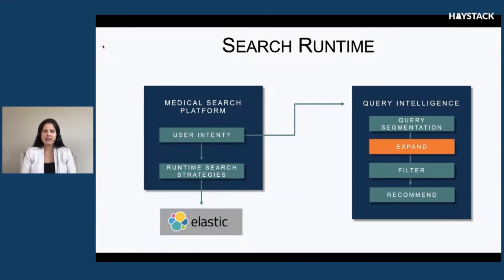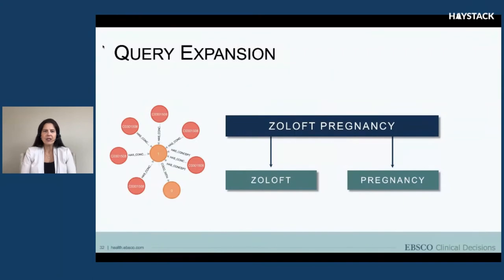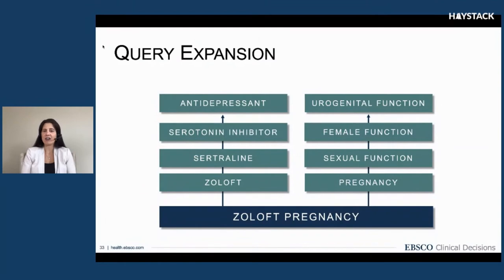Let's look at why we would want to expand a particular query. Here is an example of classic query expansion — someone has searched for 'Zoloft and pregnancy.' We've segmented this into two concepts: Zoloft and pregnancy. However, we don't actually mention Zoloft in our content — our content mentions antidepressants. So what we can do is interrogate our knowledge graph to create a bridge between the query and our content. We can traverse our knowledge graph and create that connection between Zoloft and antidepressant.